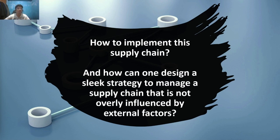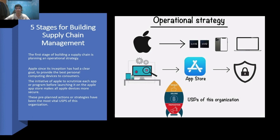So how do you implement this supply chain, and how can one design a sleek strategy to manage a supply chain that is not overly influenced by external factors? There are five stages for building supply chain management. The first stage is planning an operational strategy. The main focus at this stage is designing a strategy that yields maximum profit. Apple, since its inception, has had a clear goal to provide the best personal computing device to consumers. The initiative of Apple to scrutinize each app or program before launching it on the App Store makes all Apple devices more secure. This pre-planned strategy has been most vital to the success of the organization.